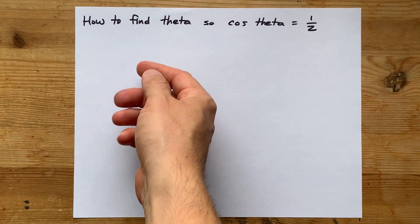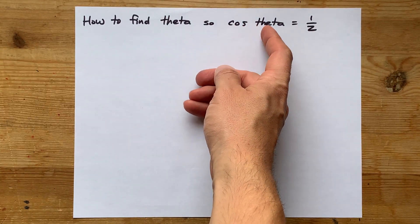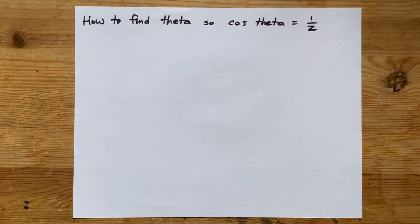How can you find theta if you're told that the cosine of theta is one-half? That's positive one over two.